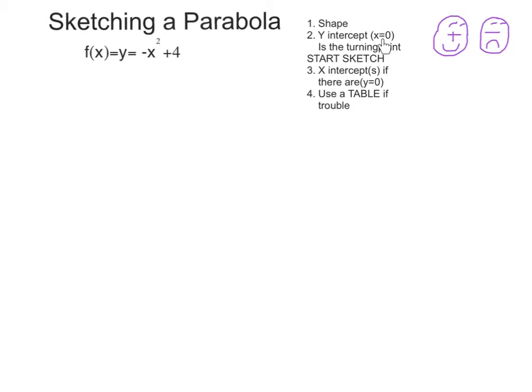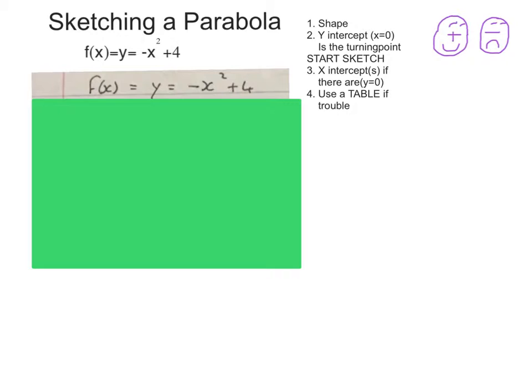The y-intercept, we make x naught, which is your turning point also. X-intercept, we make y naught. Like I said, we use the table if we have trouble. I rewrote the equation for us. So, we have here, f(x) = y = -x² + 4. I'm going to stick to that.